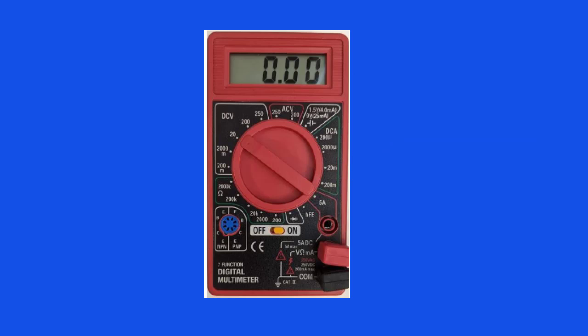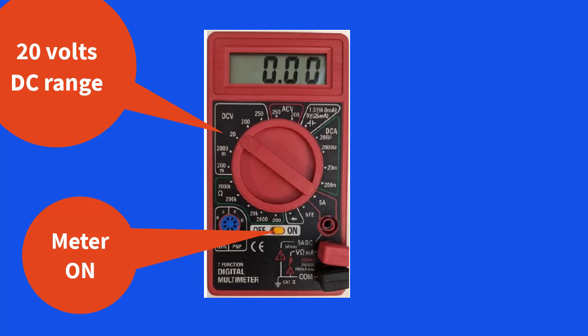When we set the selector knob to the 20 volts DC range and turn the meter on, we should see 0.00 in the display.